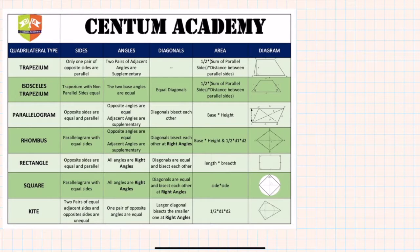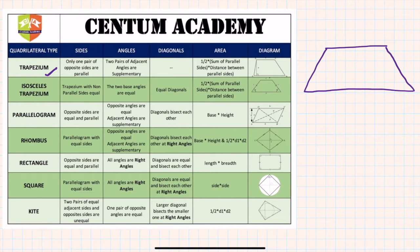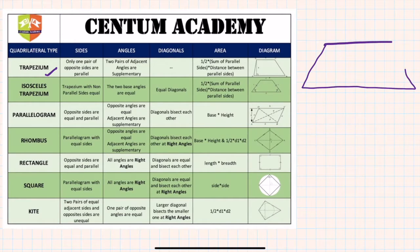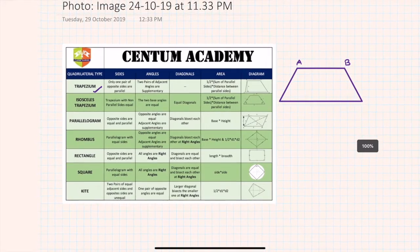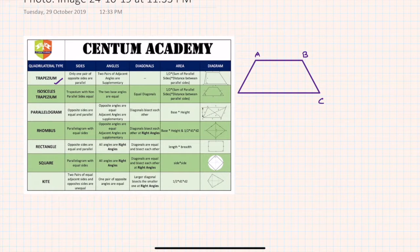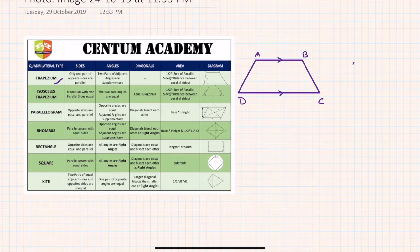Let's discuss all of these one by one, and in the subsequent sessions we'll take up problems on the same. The first type of quadrilateral is the trapezium. In a trapezium ABCD, only one pair of opposite sides is parallel. So AB and CD are parallel, while the sides AD and BC are not parallel — these are called the non-parallel sides.